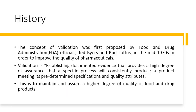How did this concept of validation come into existence? This term was first proposed by FDA officials Ted Byers and Bud Loftis in the mid-1970s in order to improve the quality of pharmaceuticals. They stated that validation is establishing documentary evidence that provides a very high degree of assurance that a specific process will consistently produce a product meeting its predetermined specification and quality attributes, in order to maintain and assure a higher degree of quality of food and drug products.